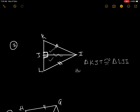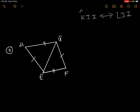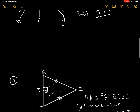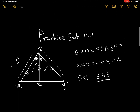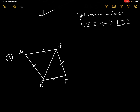The test is Hypotenuse-Side test. The correspondence is KJI corresponding to LJI. Then see the next figure. In this figure, the middle side is common to both triangles. We are given side HG is congruent to side EF, and side HE is congruent to side GF. The common side is shared by both triangles.